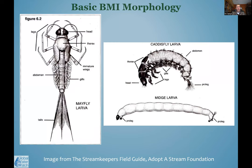In terms of anatomy, benthic macroinvertebrates have certain structures. Getting familiar with what you're looking at and comparing it to a diagram helps — for example, does it have gills or not, does it have three tails or two, what type of legs does it have. Knowing the terminology helps when using a guide to compare against the creatures you've collected.